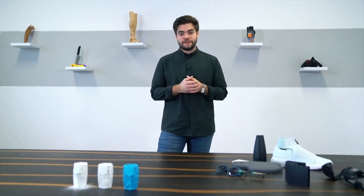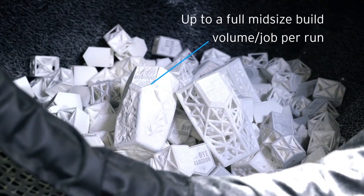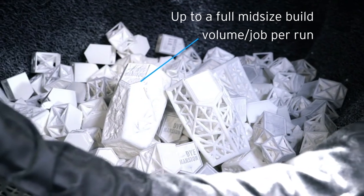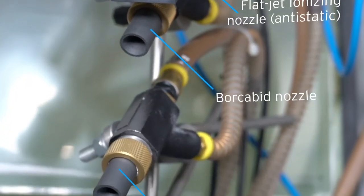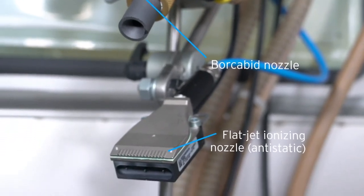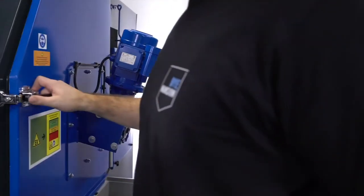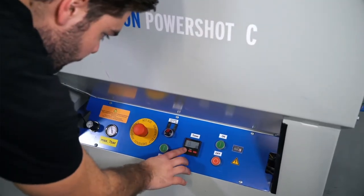How does it work? Once you unpack your parts from the 3D printer, you can directly put them into the PowerShot C system. There we are using a rotary basket and two blasting nozzles that shoot media onto the parts to remove excess powder. It's a 10-minute process and it's very efficient and productive.